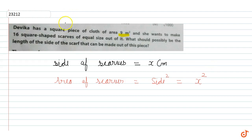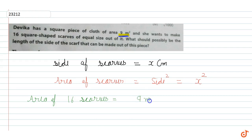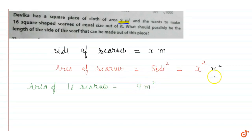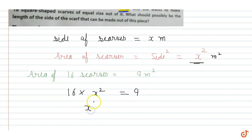If we can see here, we have given that we have 9 meter square cloth, which makes 16 square shaped scarves. So area of 16 scarves is equal to 9 meter square. Therefore, 16 into x square is equal to 9, so x square is equal to 9 by 16.